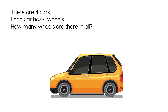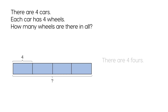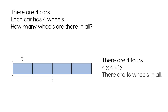There are four cars. Each car has four wheels. How many wheels are there in all? There are four fours. Four times four equals 16. There are 16 wheels in all.